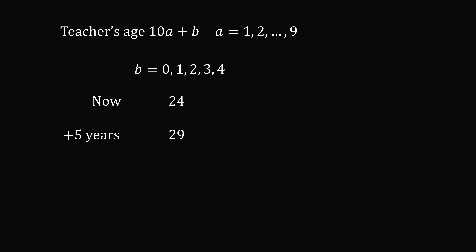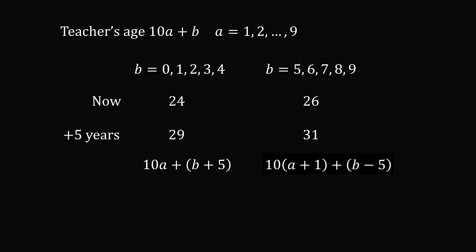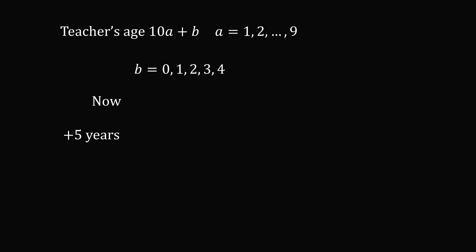Here b is equal to 4. In five years time, the teacher's age will be 29. So in five years time, the teacher's age will be 10a plus b plus 5. But what if instead b were a digit from 5 to 9? Say the teacher's age is 26 with b equal to 6. In five years time, the teacher's age will be 31 — there's carryover in the digits. So the teacher's age will be represented as 10 multiplied by (a plus 1) plus (b minus 5). We'll tackle each of these cases separately, starting with b being a digit from 0 to 4.